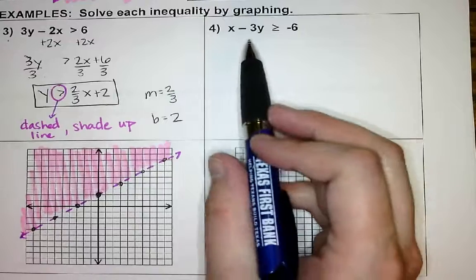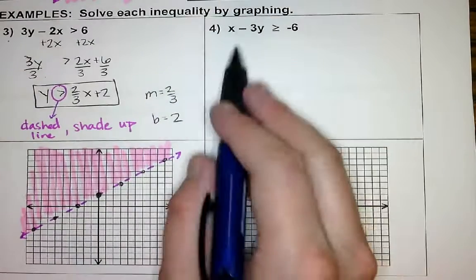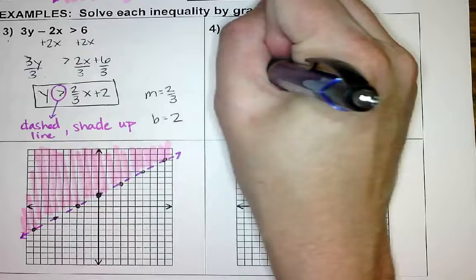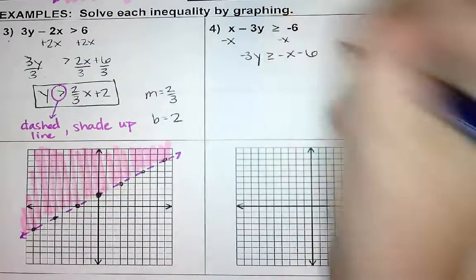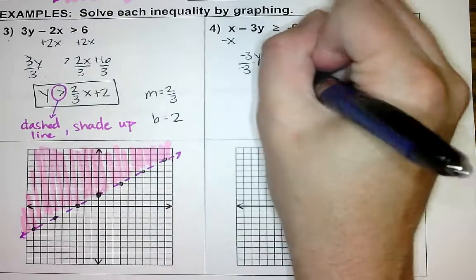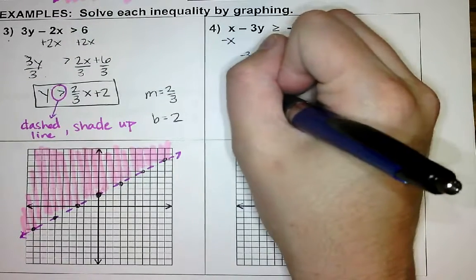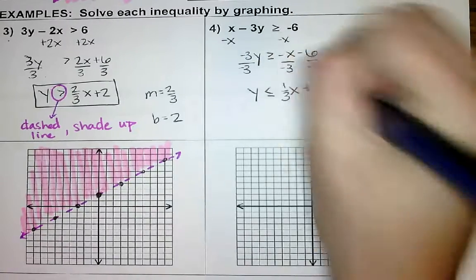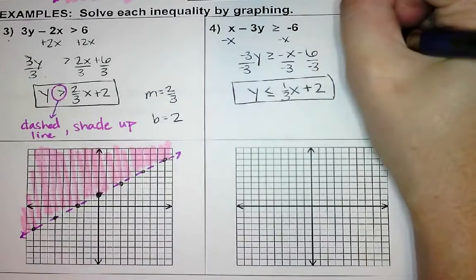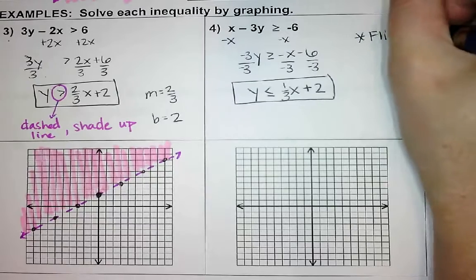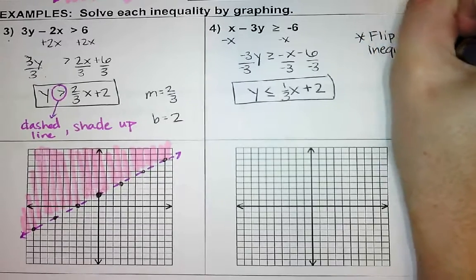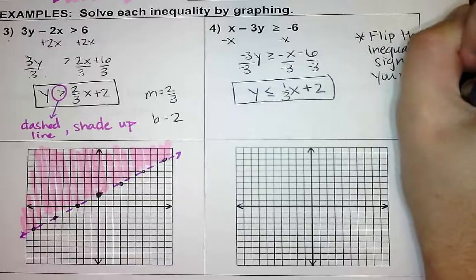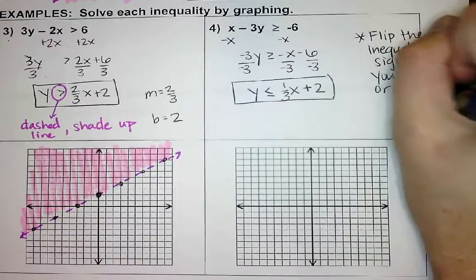Can we graph number 4 just like this? No — we're going to subtract x from both sides, which leaves us with negative 3y is greater than negative x minus 6. I divide by negative 3. When I divide by negative 3, what is going to happen to my inequality sign? It flips. You flip the inequality sign when you multiply or divide by a negative.